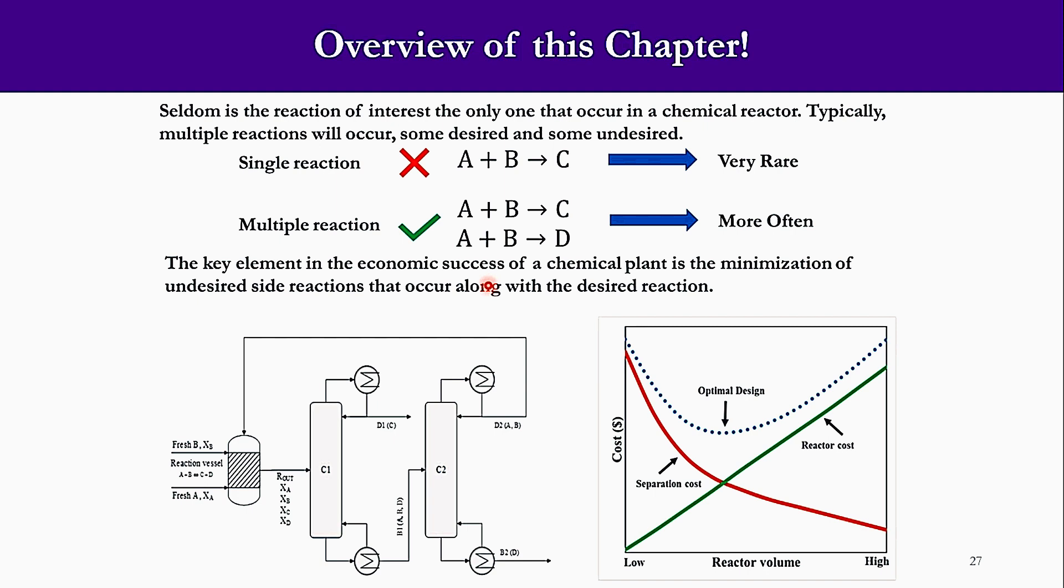This is the real-time scenario, but before coming to this scenario we must have some understanding so that we will be able, or we should be able, to adopt it in an easy way. The key element in the economic success of a chemical plant is the minimization of undesired side reactions that occur along with the desired reaction.